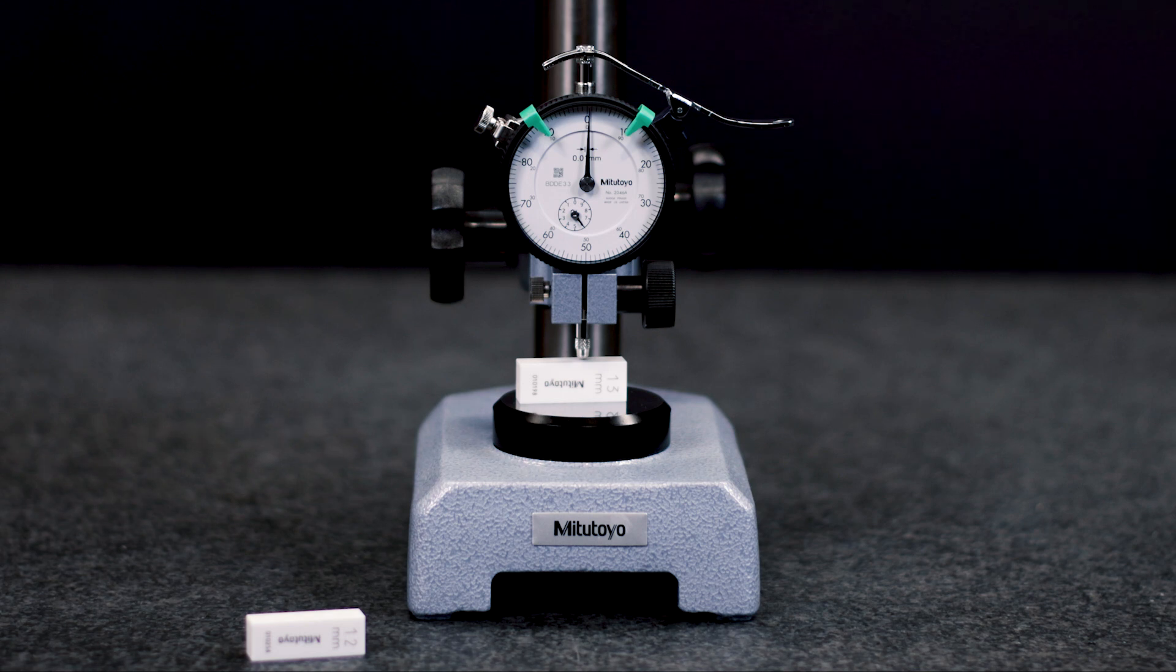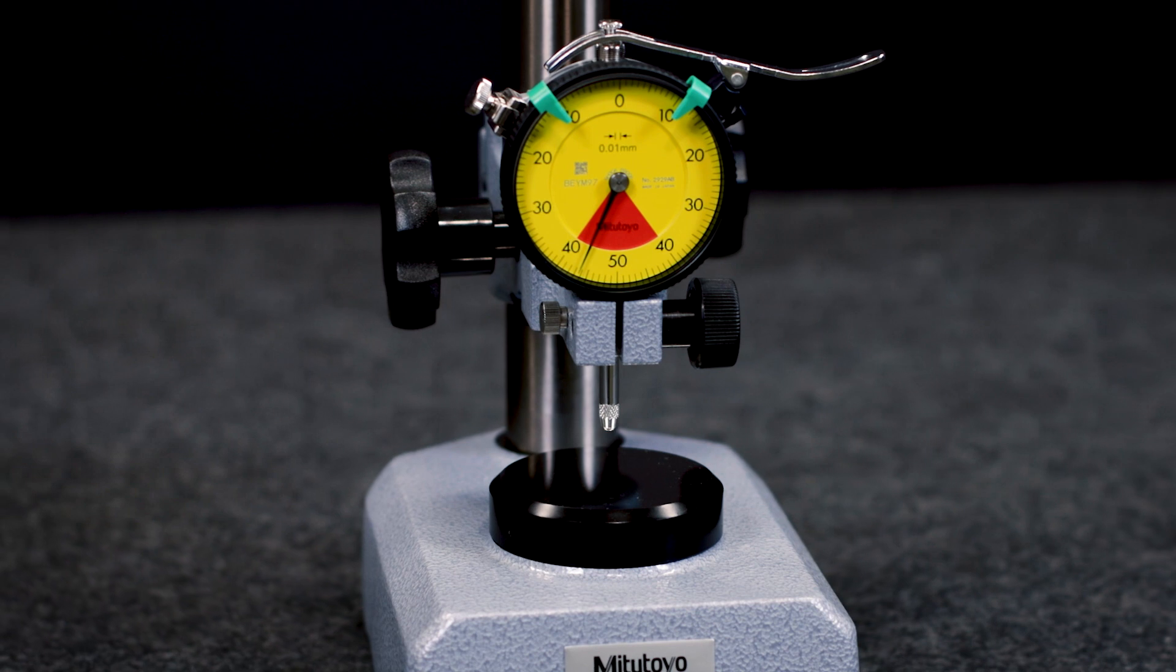Workpieces with features around 1 mm smaller or bigger, referred to the nominal, might be judged as okay. If this is not discovered, this can result in high costs.